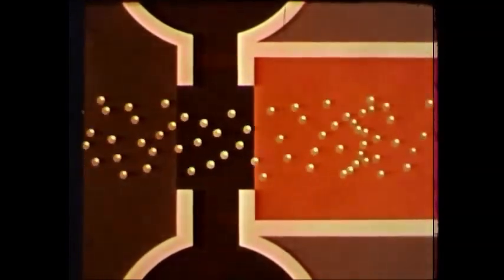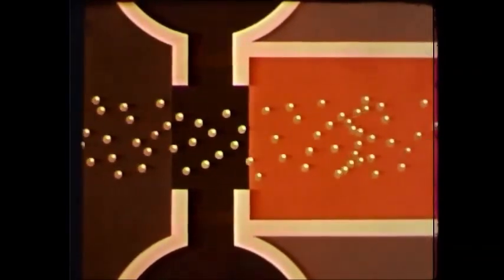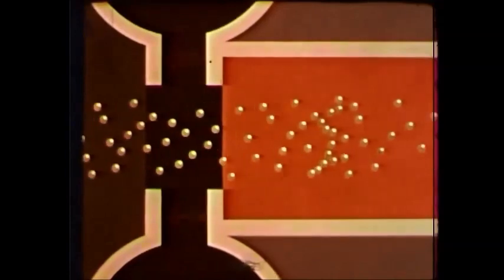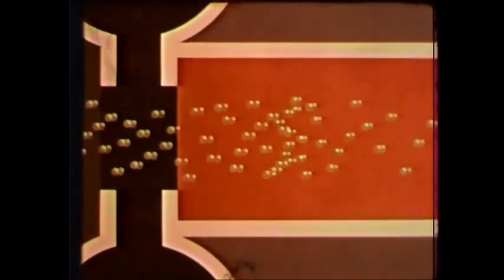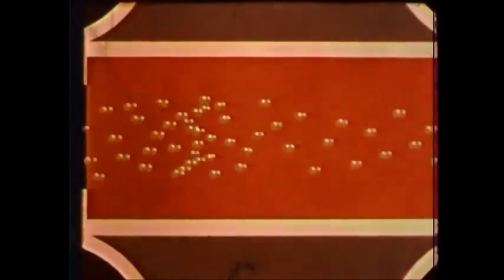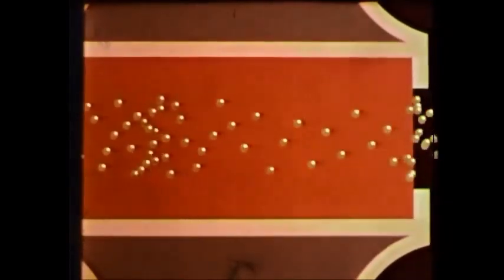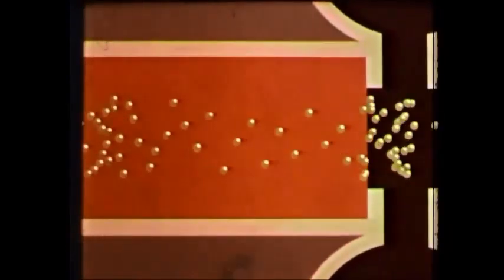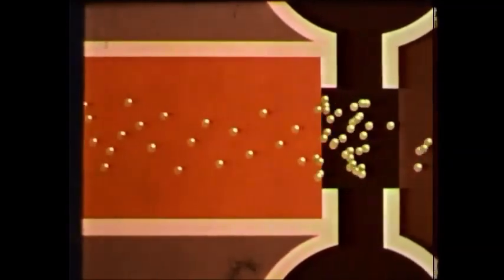With the alternating electric field present, the electrons will thus be alternately accelerated and decelerated. Consequently, they will enter the field free space between the two resonators at varying speeds. In this space, known as the drift space, the fast electrons will overtake the slow ones and bunches will be formed.